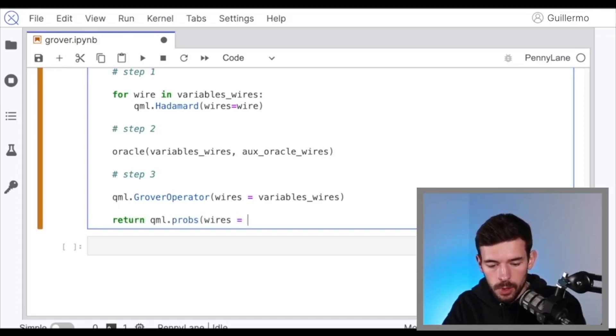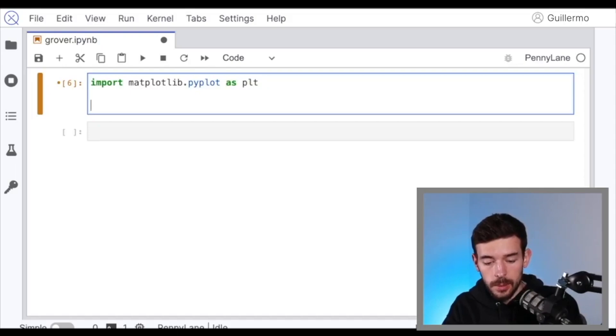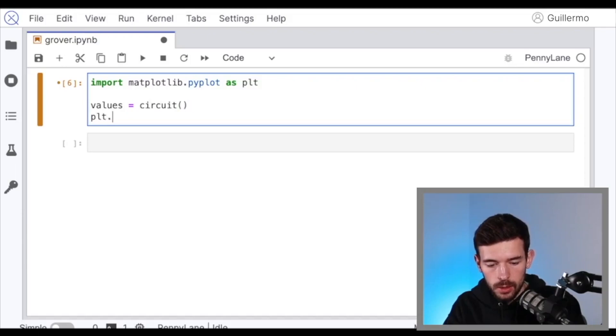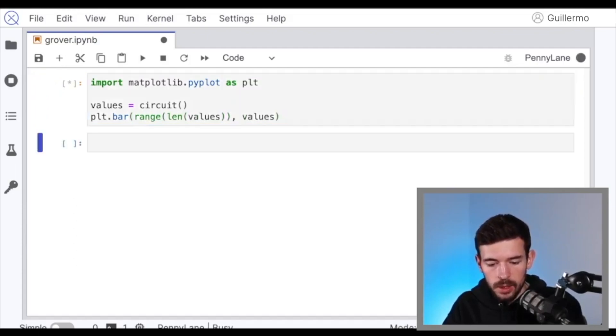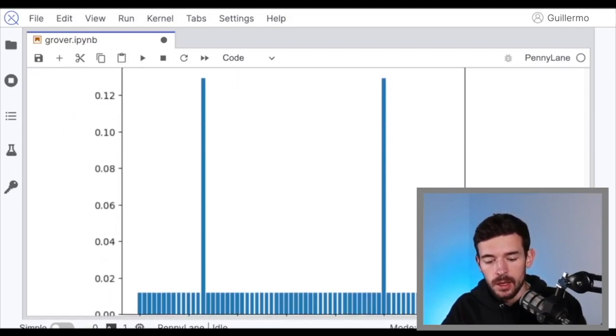And then we can return, let's return the probabilities of each of the basic states. So now, in order to see the solution, let's import matplotlib, let's get the values of the different probabilities of each state following the circuit, and then we can plot it, something like plt.bar. So if I do that, we can see that there are two solutions that we amplify and the other ones, the probability decreased.